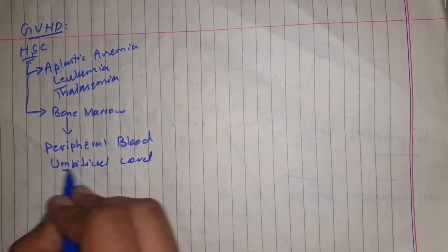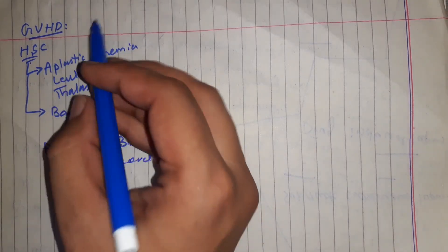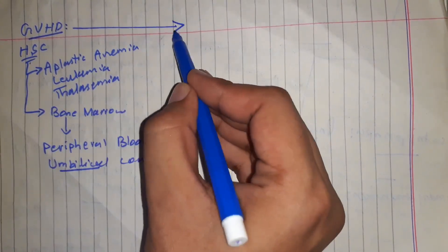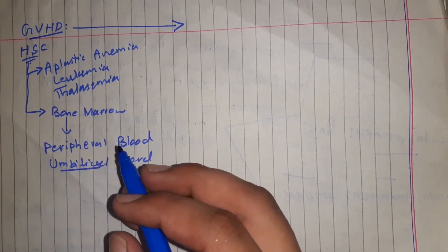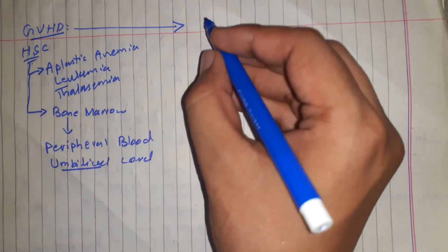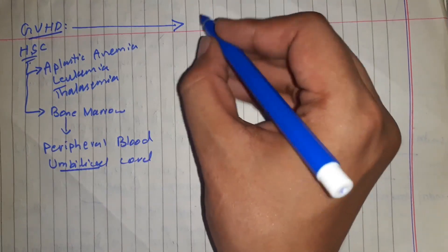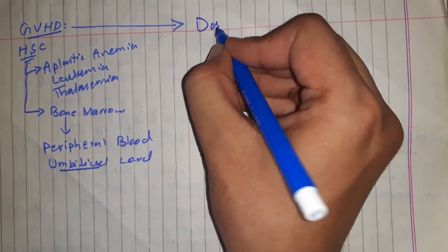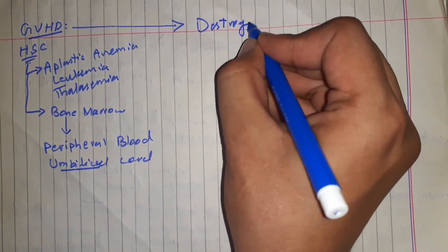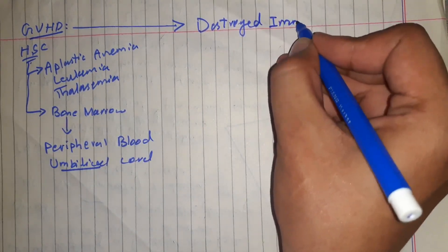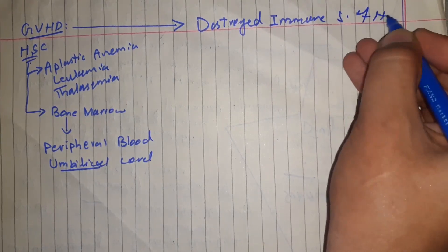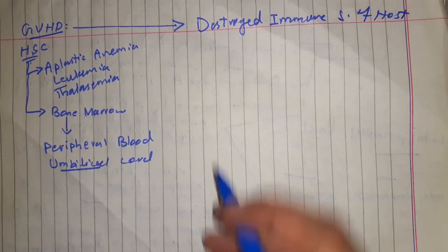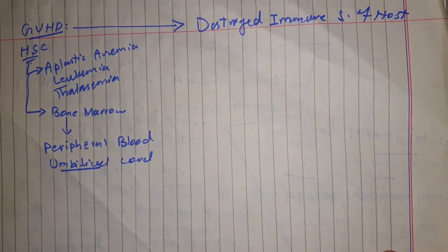Before transplanting the hematopoietic stem cells, the host is irradiated or subjected to chemotherapy to destroy the immune system. So the immune system of the host is destroyed, leaving the host in a state of immunodeficiency or immunosuppression.